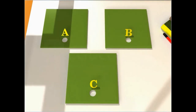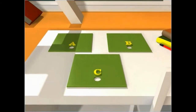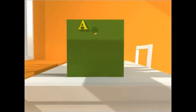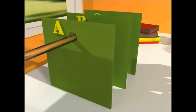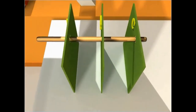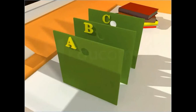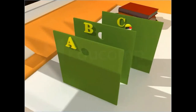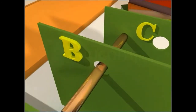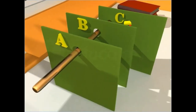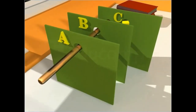If you arrange these cardboard pieces such that each of them stands one behind the other and then pass a straight stick through the three holes, the stick would pass through each hole easily. If you change the position of any one of the cardboard pieces, the straight stick will not pass through all three holes. This activity will help us understand the concept of collinear points.